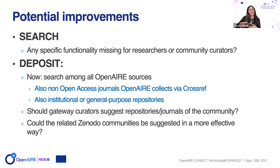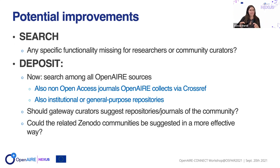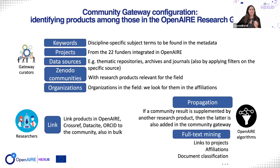The gateway helps you at discovering and finding the research outputs, because we get metadata from a lot of different places. So you don't have to go to four, five, or six repositories to find what you're looking for — you just come here and find it. This question is linked to my next slide, which is the community gateway configuration: how do we determine that a research outcome belongs to the community?